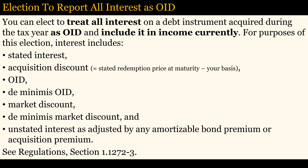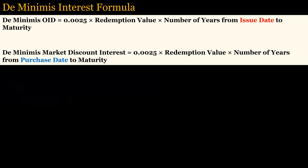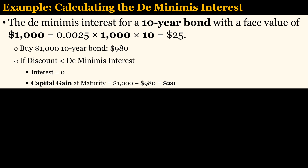Since OID interest and market discount interest are treated similarly, you can elect to treat all such interest as OID to simplify reporting. There is a de minimis value for both OID and market discounts. If the discount is less than the de minimis value, then the value can be treated as zero for the annual reporting of interest. Note, however, that the de minimis value for a market discount uses the number of days from the purchase date to the maturity date, whereas the de minimis value for OID equals the number of days from the issue date to maturity. If the de minimis value is not reported as interest, then it must be reported as a capital gain if held to maturity or when the bond is sold.